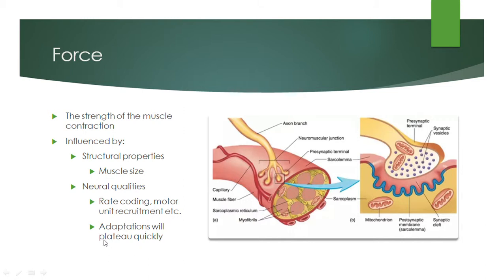However, these neural adaptations are probably going to plateau pretty quickly. It's pretty commonly demonstrated in the research that neural adaptations generally occur quite quickly, and then they don't progress very much if the same stimulus is presented. So once we've become extremely efficient from a neural standpoint, we can't really produce much more force unless we change the structural properties of the muscle.